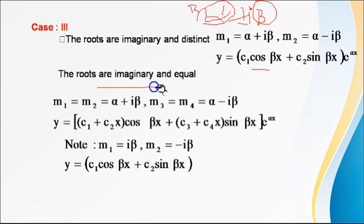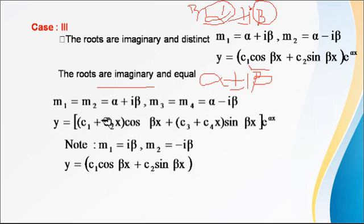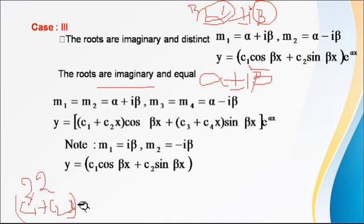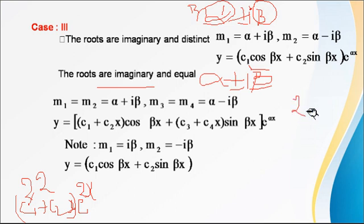Now suppose the imaginary roots are repeated, that is alpha plus or minus i beta occurs twice. We already know that for real repeated roots, say 2 and 2, the CF is (c1 + c2 x) e^(2x). Similarly, for repeated imaginary roots, we write: y = e^(alpha x) times [(c1 + c2 x) cos(beta x) + (c3 + c4 x) sin(beta x)]. For example, if roots are 2 plus or minus root 3 i, then alpha = 2 and beta = root 3.